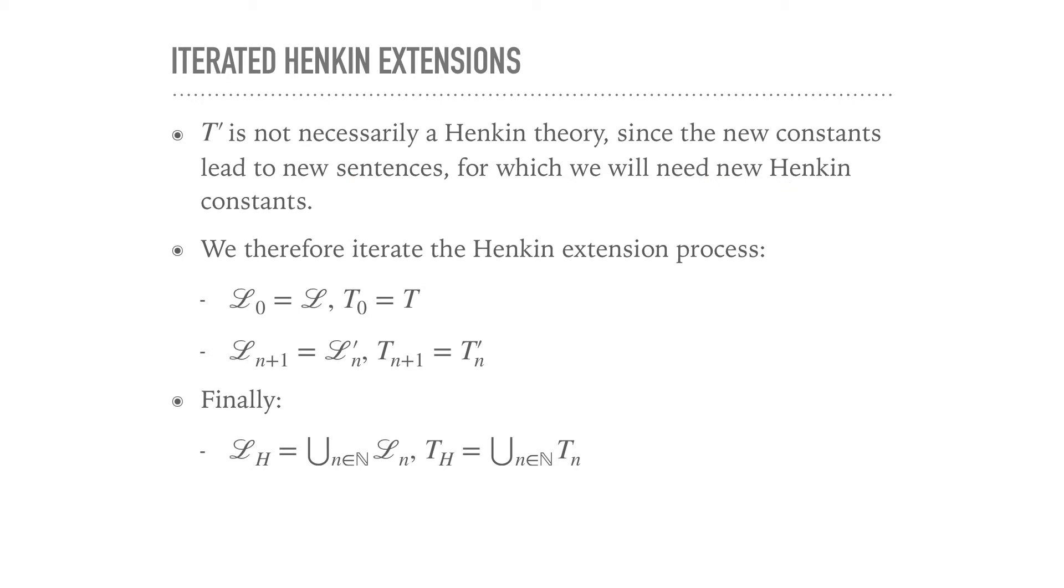So, what do we do? Well, we iterate the whole extension process. We start with L and T, and then at the step n+1, we just take the extension of the language first by the constant symbols, always adding new constant symbols that have not been used in L_n. And then, take the Henkin extension for that particular theory T_n to give us T_{n+1}. And then, in the final step, we throw all of these languages together in one big language and all of these theories together in one big theory, T_h.